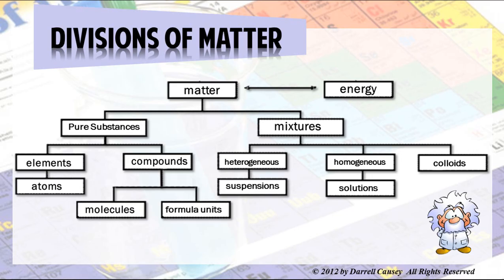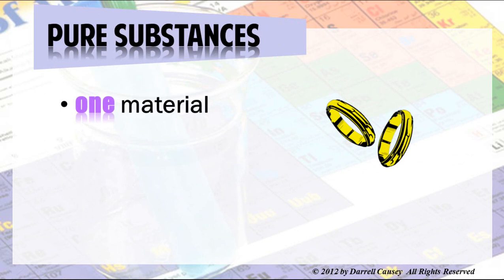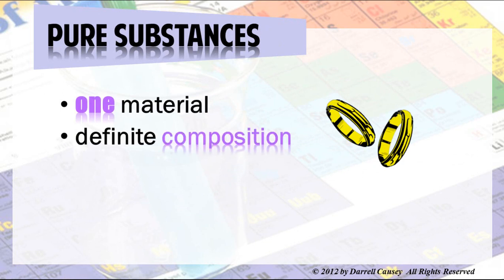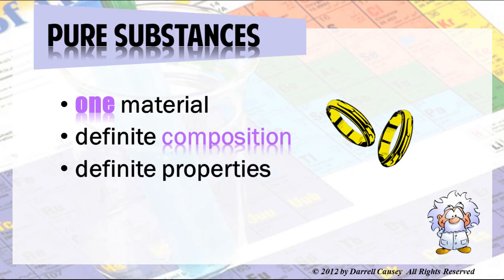Pure substances have one material, a definite composition, and definite properties. Gold, copper — the elements are pure substances made up of one material with definite composition and definite properties. Gold is the same everywhere, silver is the same everywhere. And the same with compounds: water is the same everywhere — two parts hydrogen, one part oxygen. Sodium hydroxide, sodium chloride, and glucose are the same everywhere. Elements and compounds have definite compositions and definite properties, which we'll discuss further when we talk about physical and chemical properties.